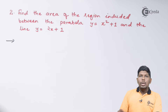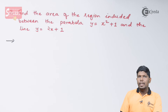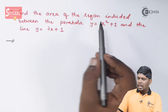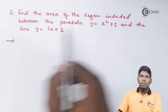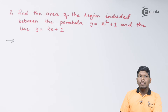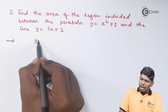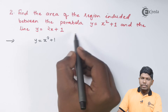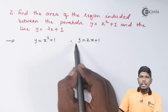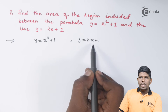Both equations are not in standard form, so we need to first find the point of intersection. We can also decide the nature of the parabola: out of the two variables, the minimum power is with y and y is positive, so this parabola will go in the positive y direction. We have y equals x squared plus 1 and y equals 2x plus 1.